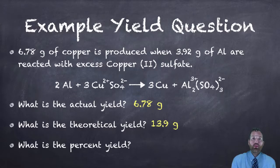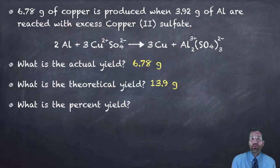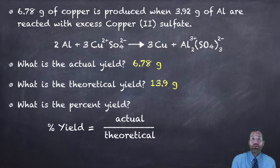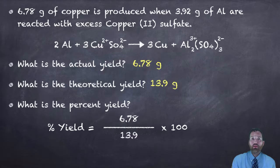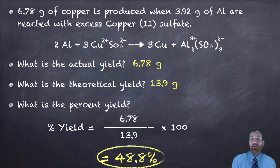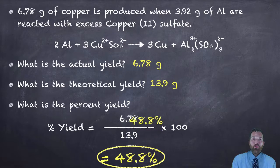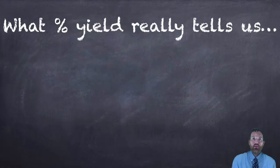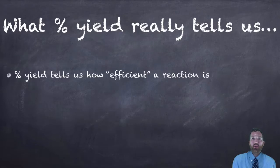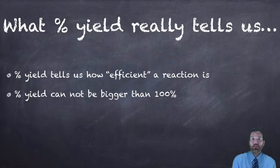We'll plug that in, and then the percent yield — this is just a comparison of the two. We do actual yield divided by theoretical yield times 100. Our actual yield is 6.78 grams, our theoretical yield is 13.9 grams. Divide those numbers and multiply by 100 and we get 48.8%. So 48.8% is our percent yield, which tells us how efficient the reaction is or how efficient the laboratory student is.